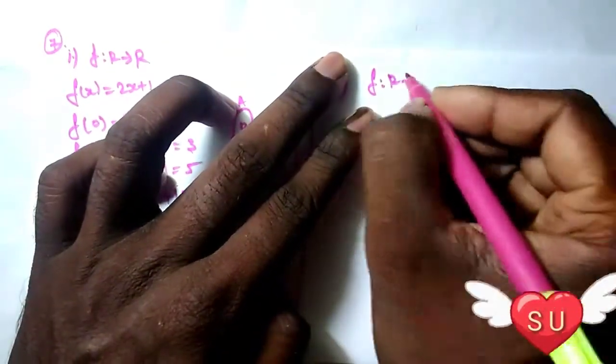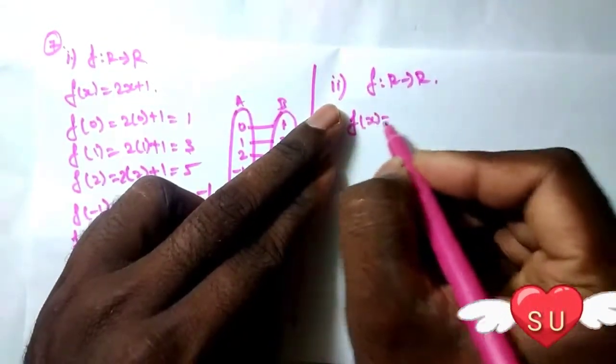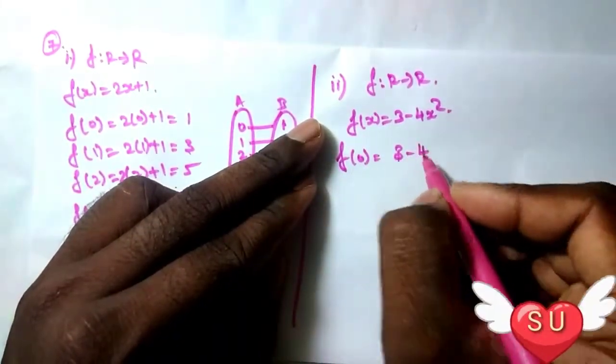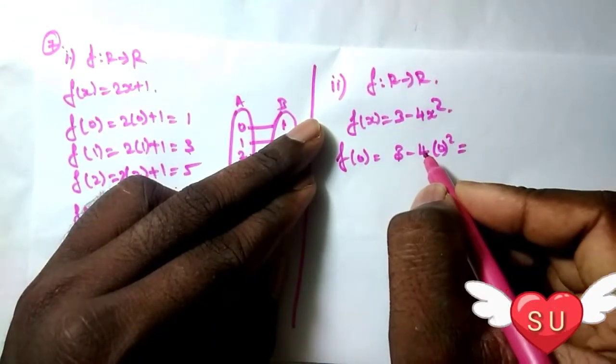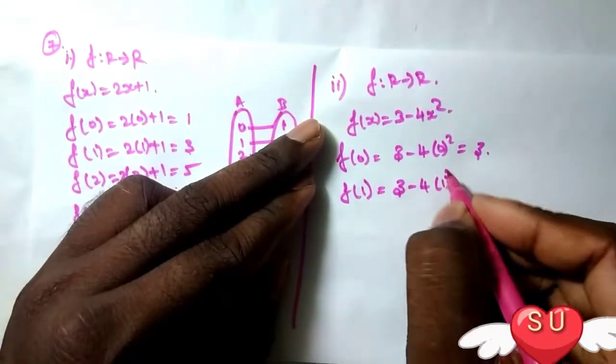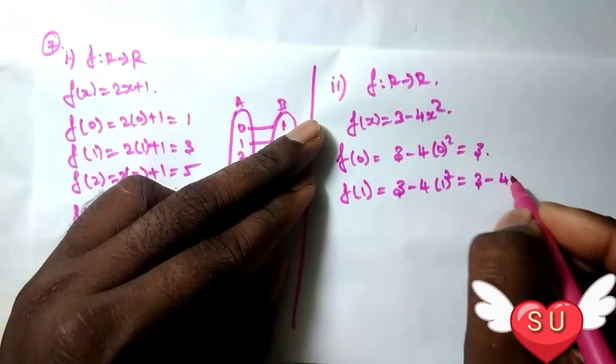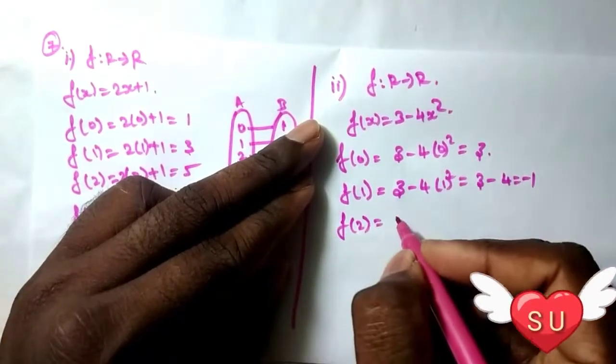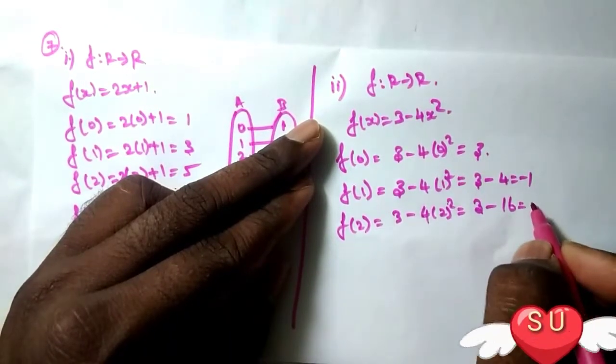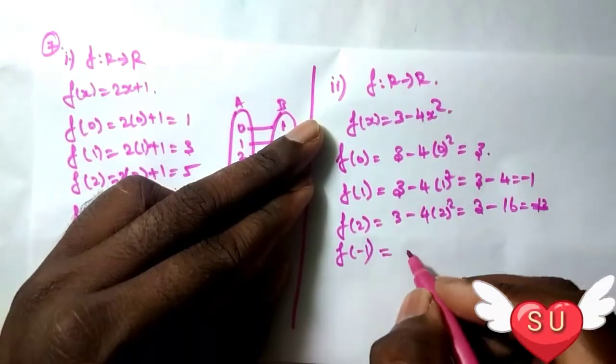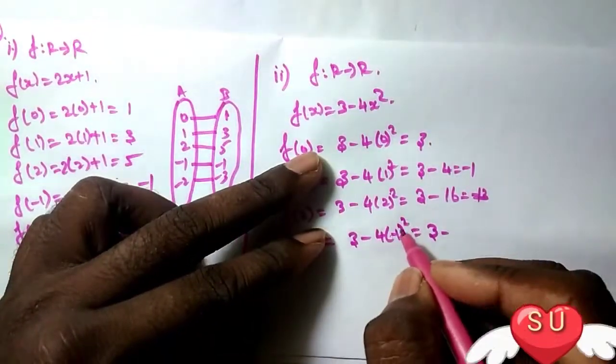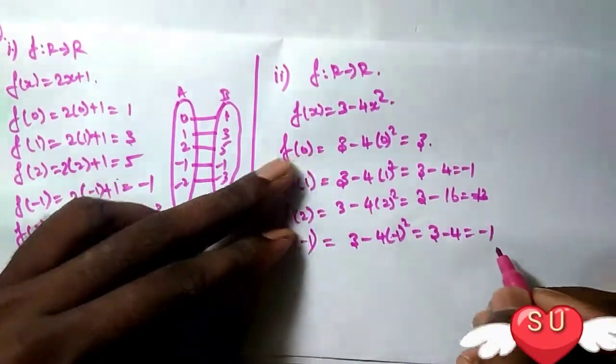For the second function, f: ℝ → ℝ defined by f(x) = 3 - 4x². Testing values: f(0) = 3 - 4(0)² = 3. f(1) = 3 - 4(1)² = 3 - 4 = -1. f(2) = 3 - 4(4) = 3 - 16 = -13.